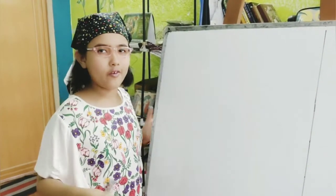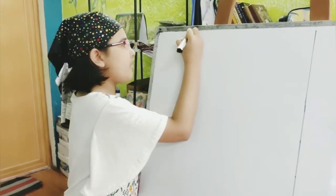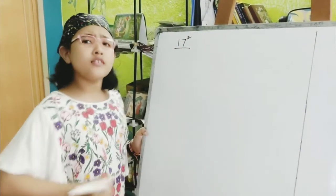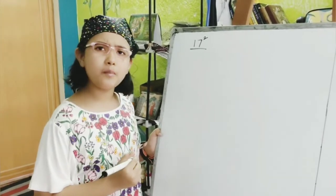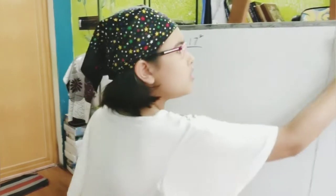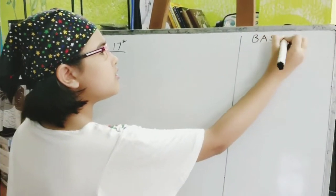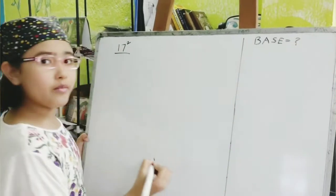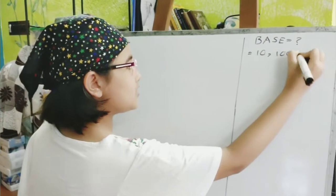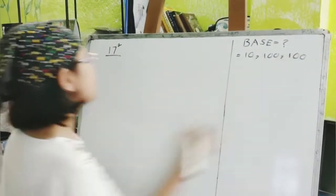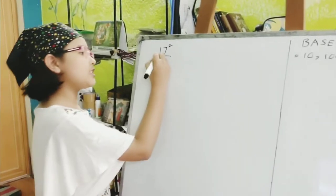You can choose any number for me. I am choosing 17. So, we'll write 17. Now, the first step will be to find the base number. Now, what is the base number? What's the base number?